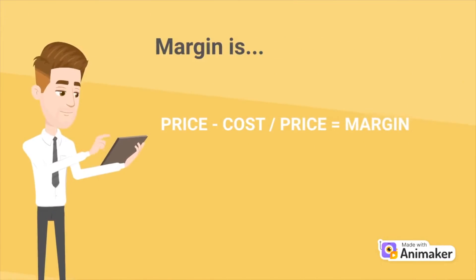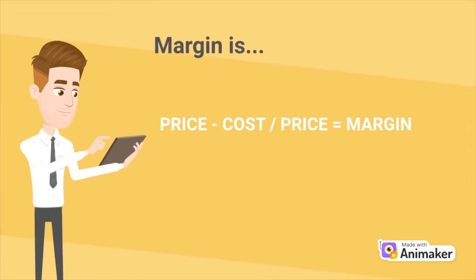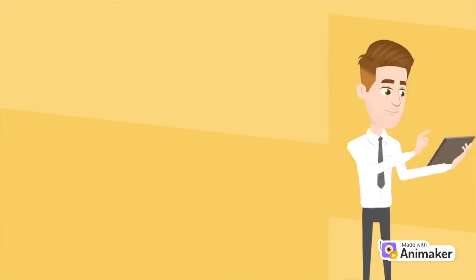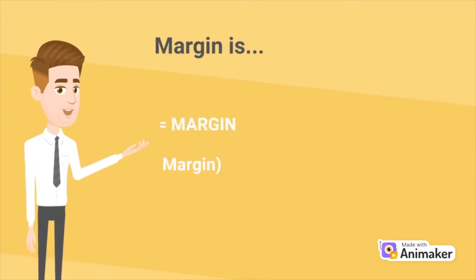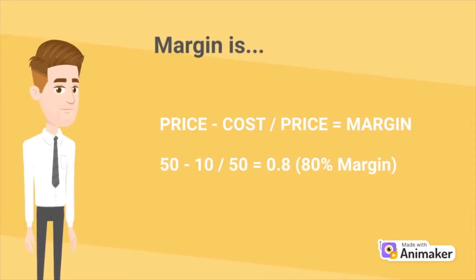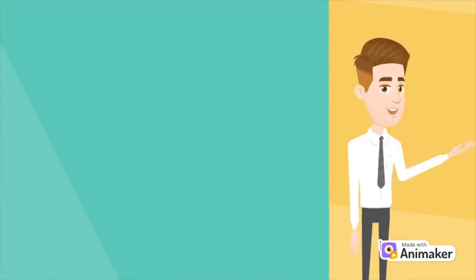Margin is price minus cost, divided by price. So if we have a $50 product that costs $10 to make or sell, we divide that by 50 to get 0.8, or an 80% margin.